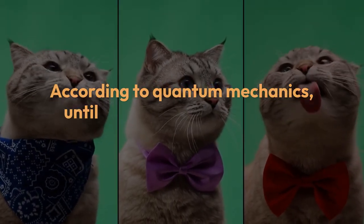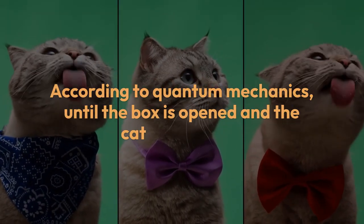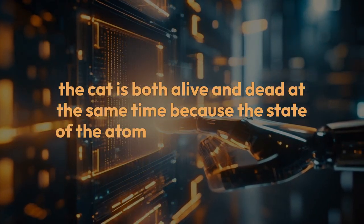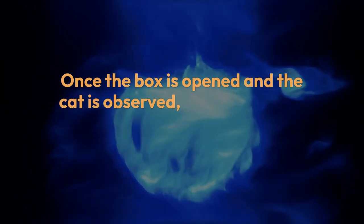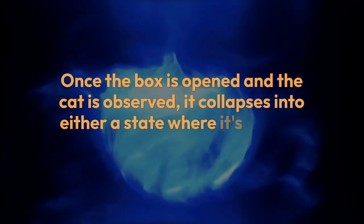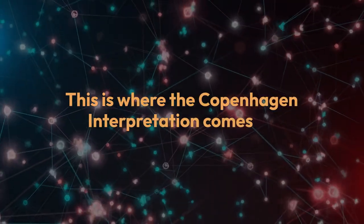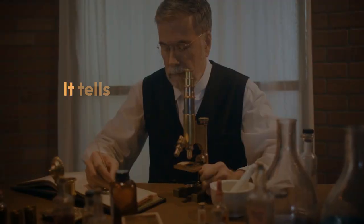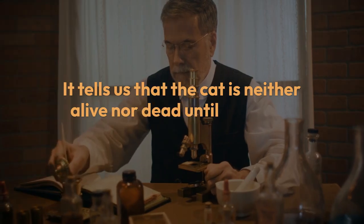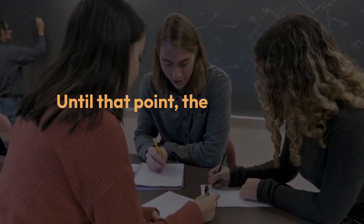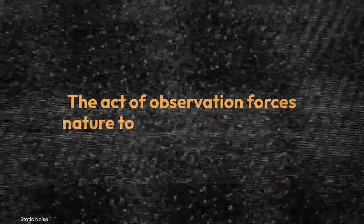According to quantum mechanics, until the box is opened and the cat is observed, the cat is both alive and dead at the same time, because the state of the atom is in a superposition. Once the box is opened and the cat is observed, it collapses into either a state where it's alive or dead. This is where the Copenhagen interpretation comes in. It tells us that the cat is neither alive nor dead until someone opens the box and observes it. Until that point, the cat's state is undecided. The act of observation forces nature to choose one outcome.